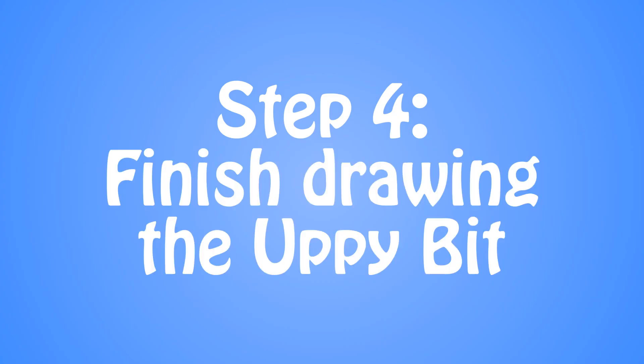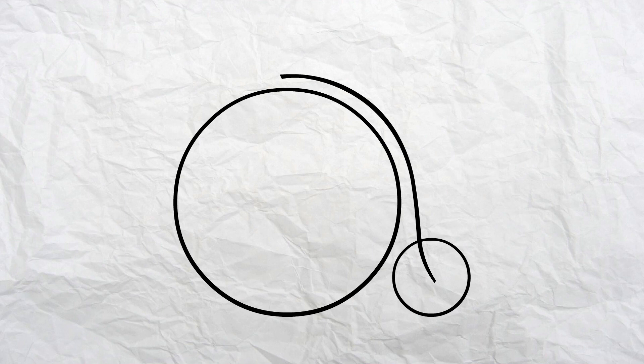Step 3: Draw the uppy bit. From the top of the first wheel, draw a line following it round and down towards the centre of the second. Yes. Carefully now. Almost. Step 4: Finish drawing the uppy bit. That, ladies and gentlemen, is the shit.